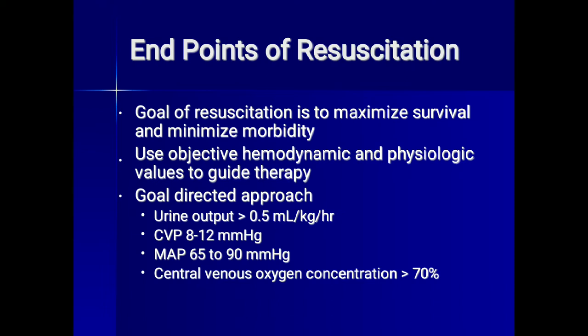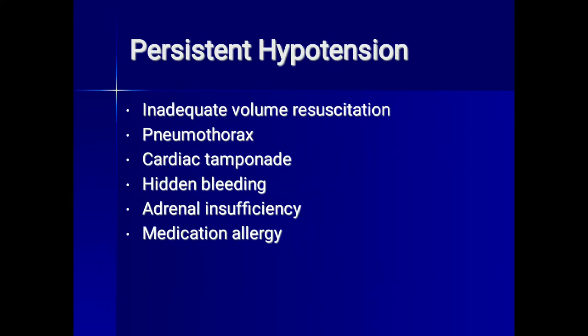End points of resuscitation are goal-directed to maximize survival and minimize morbidity. Use objective hemodynamic and physiologic values to guide therapy: urine output should be at least 30 ml per hour; CVP should be 8–12 mmHg; mean arterial pressure should be 65–90 mmHg; and central venous oxygen saturation should be more than 80%. Persistent hypotension can be due to inadequate volume resuscitation, pneumothorax, cardiac tamponade, hidden bleeding, adrenal insufficiency, or medication allergy.